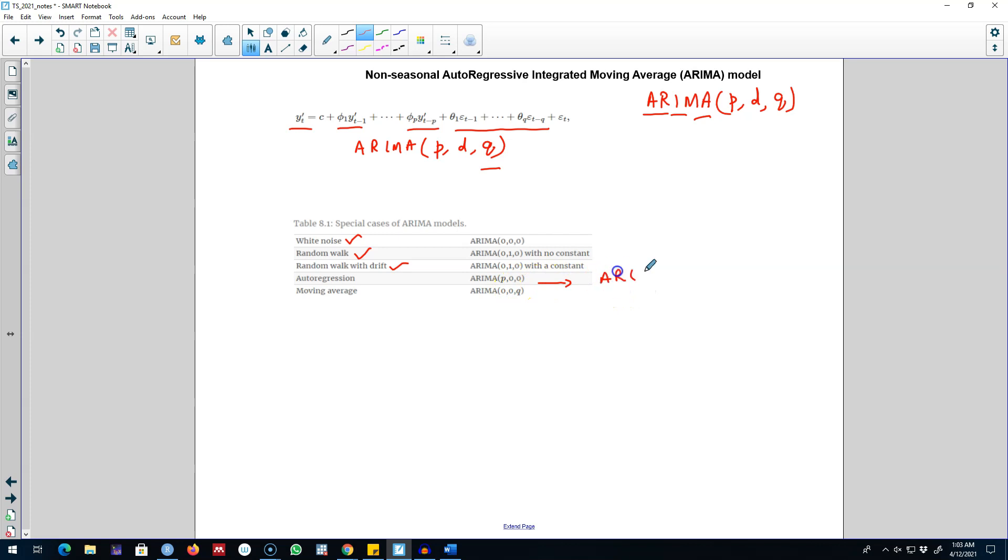Similarly, if we do not include any AR process in the model - that is, no autoregressive component is included on the right-hand side but only the error is included - then only the moving average part is included in the model. This ARIMA model can be written as (0,0,q), meaning no differencing was included and there is no AR process in the model. This model can be written as MA(q).